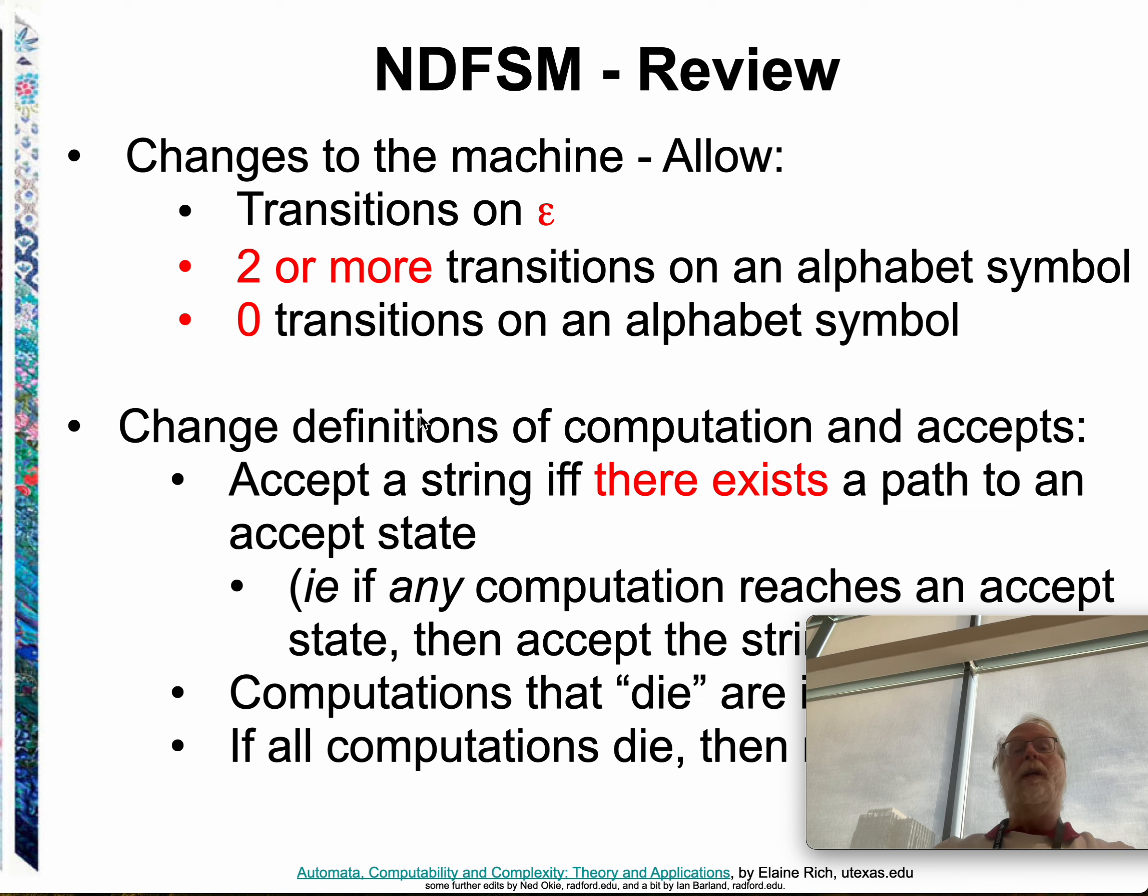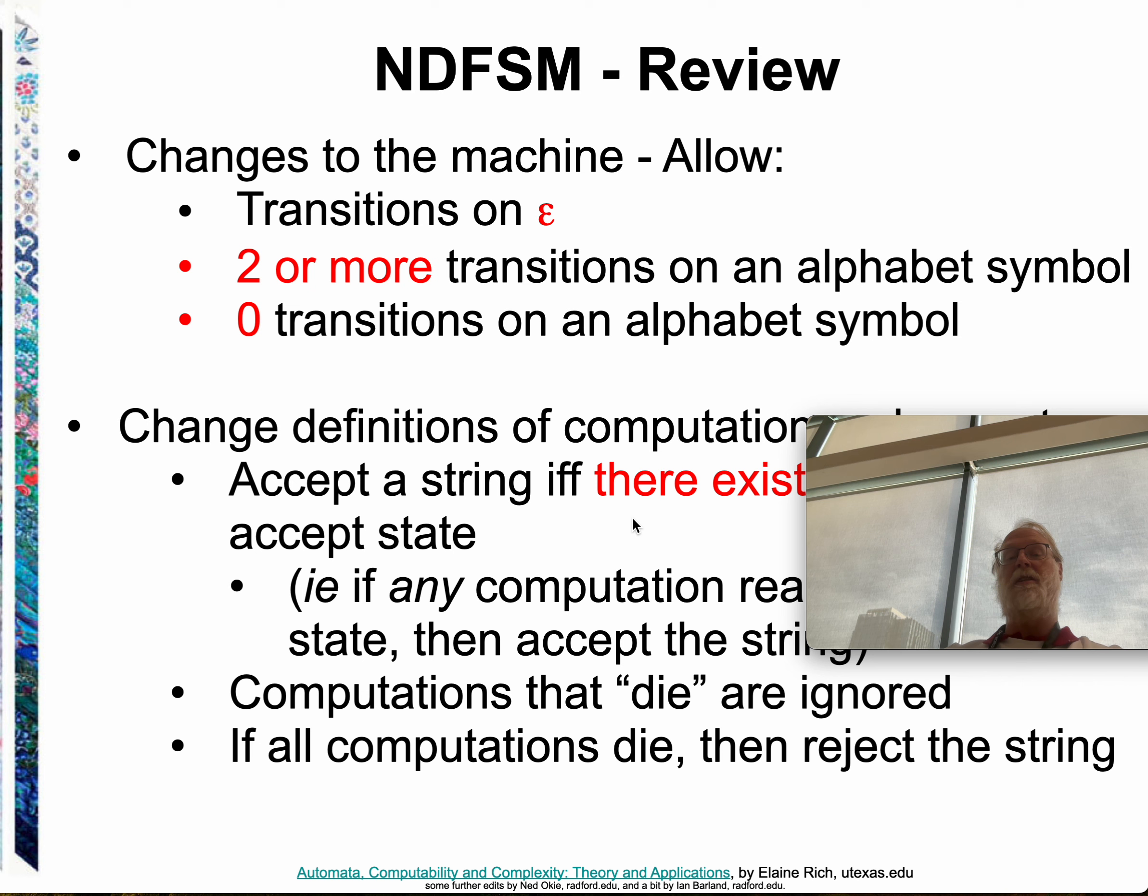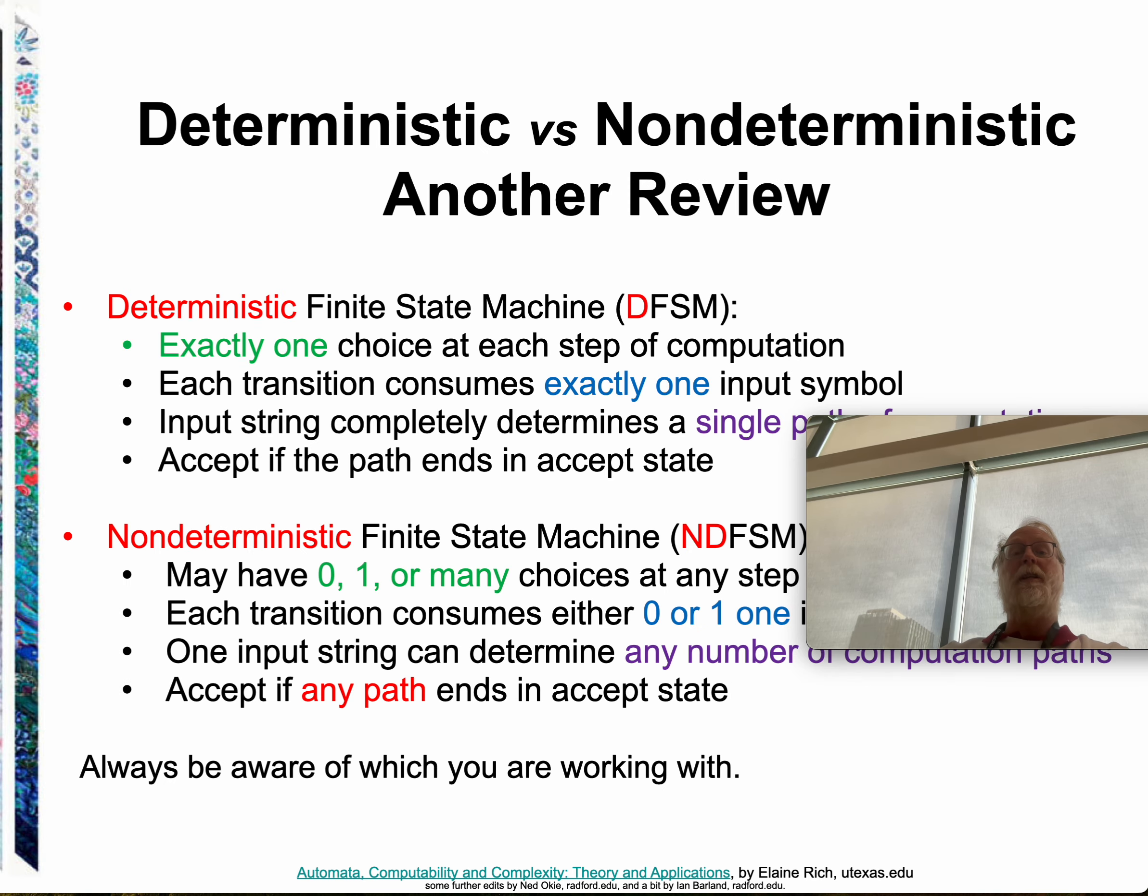Just reviewing. Non-deterministic machines allow epsilon transitions, allow zero or two or more or one transition on an alphabet symbol. So, that's again, relaxing a function to a relation is the second two bullets. The transitions on epsilon is not, that's a little bit more than just relaxing to a, from a transition function to a transition relation. And to do that, we needed to change the definition of what it meant to accept. We accept if there exists a path it would accept. Computations that die. Computations that die are ignored, and if all computations die, or do finish, but end or not accept statement, then we reject.